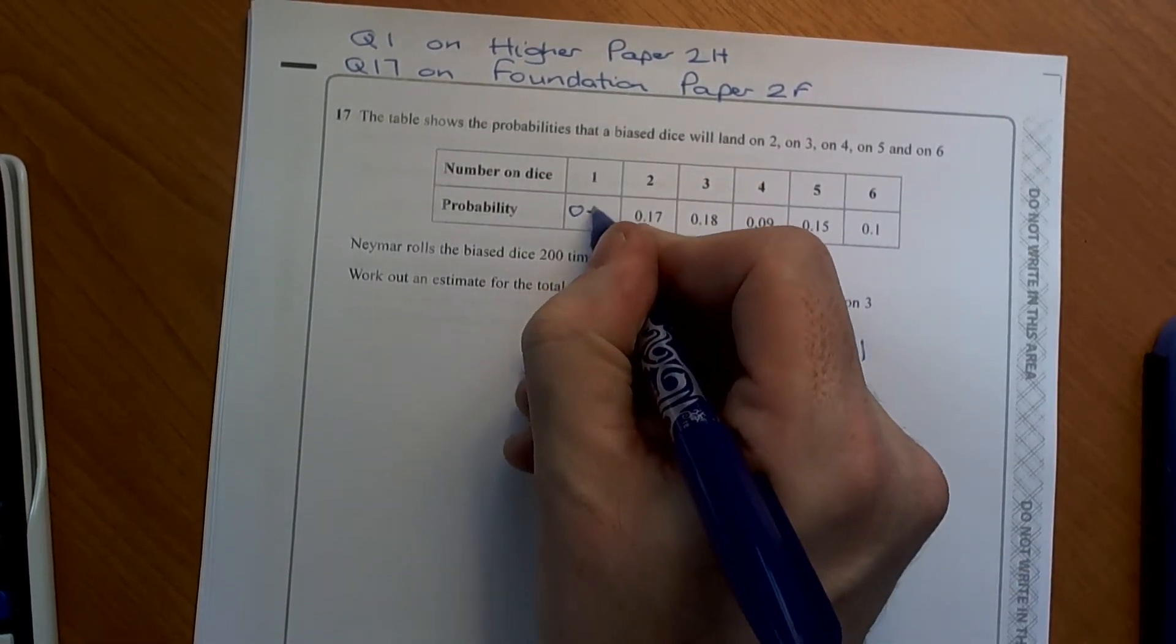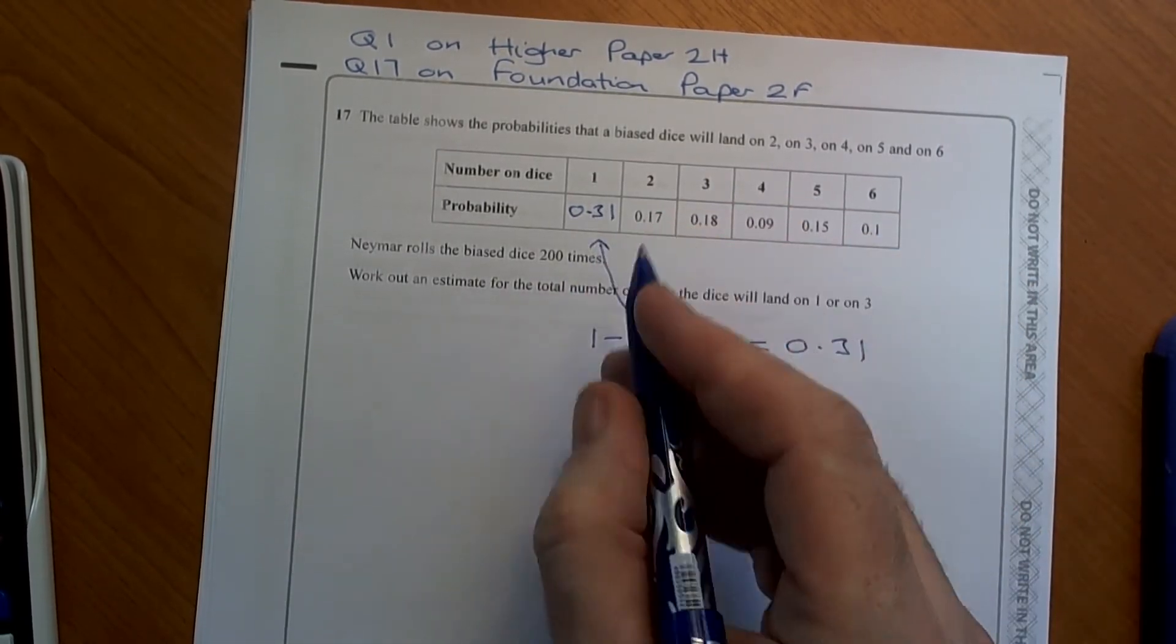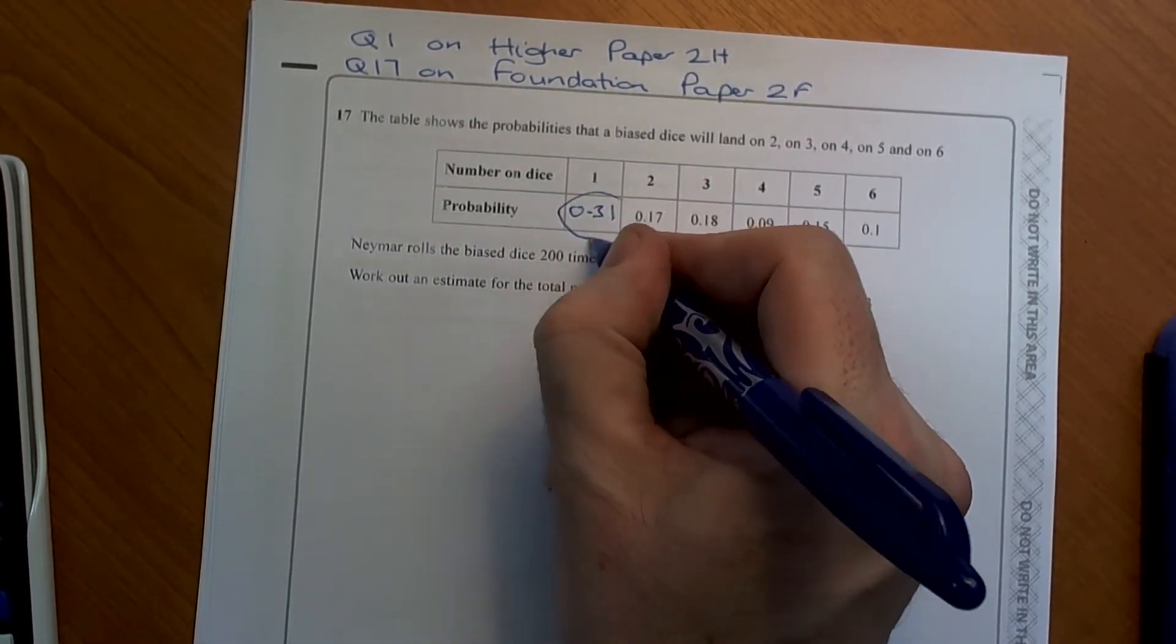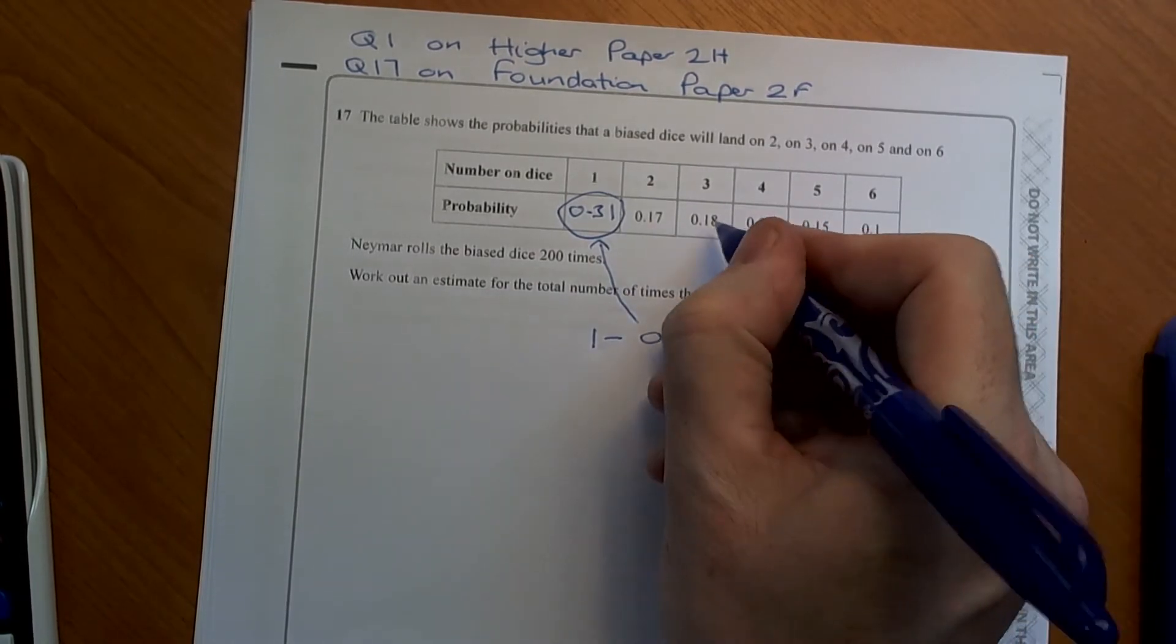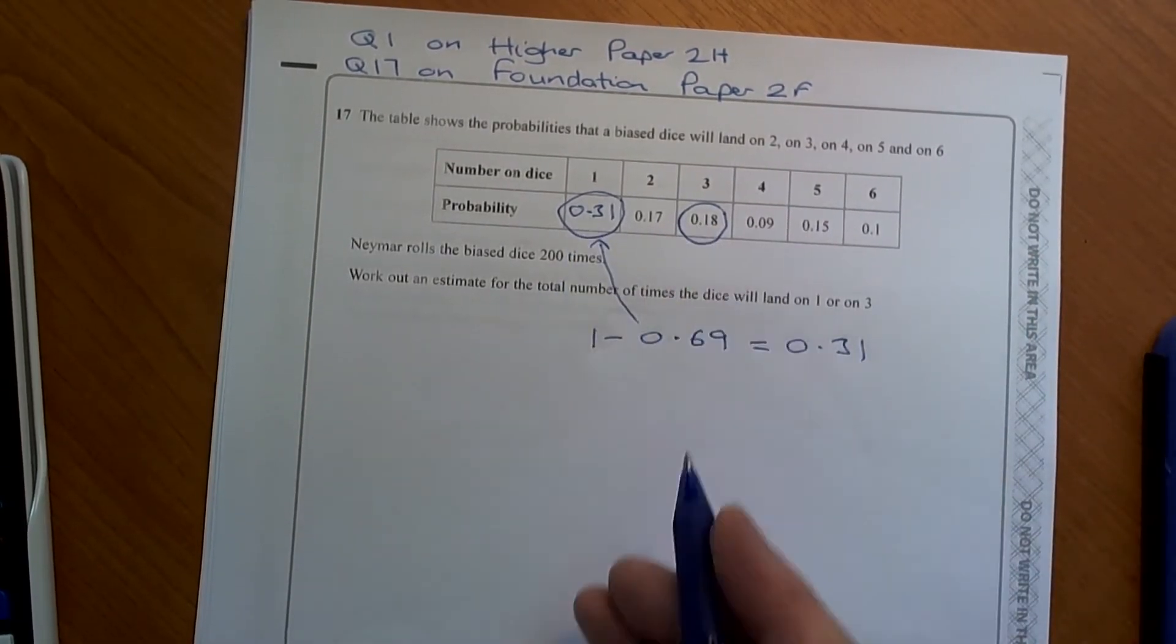So we'll put the 0.31 in there, but the two numbers we're interested in are this probability here, the 0.31 and the 0.18. We need to add those together.